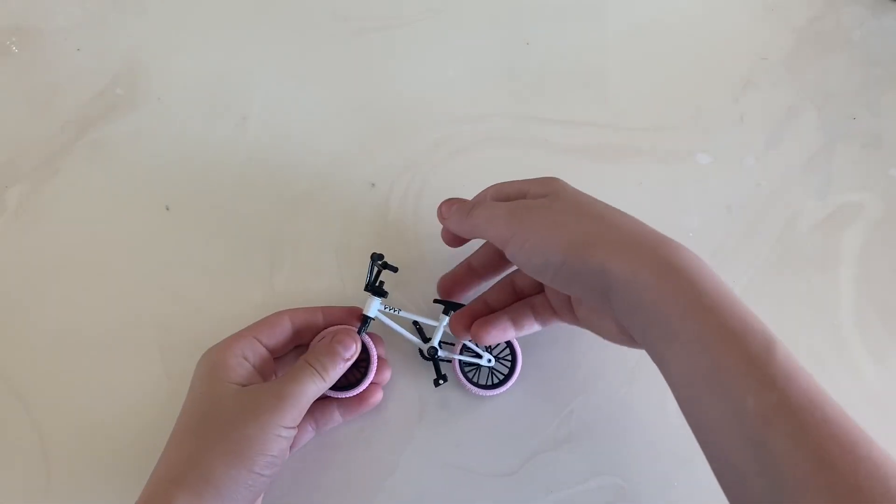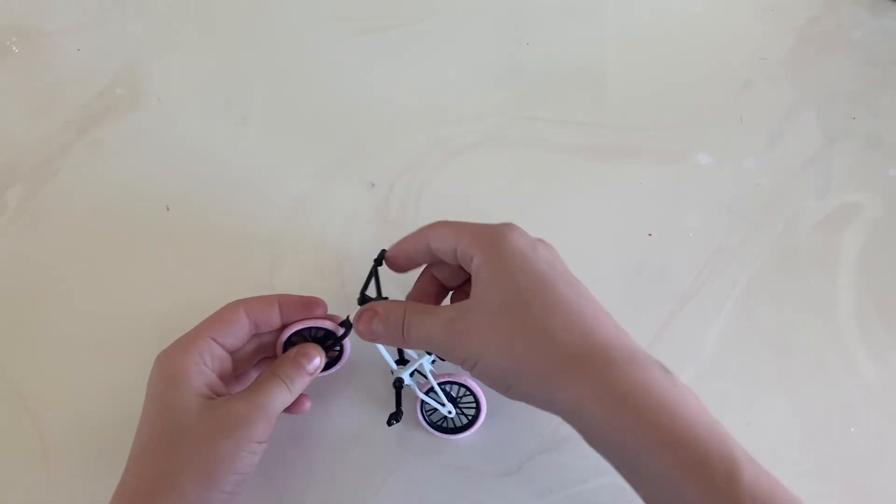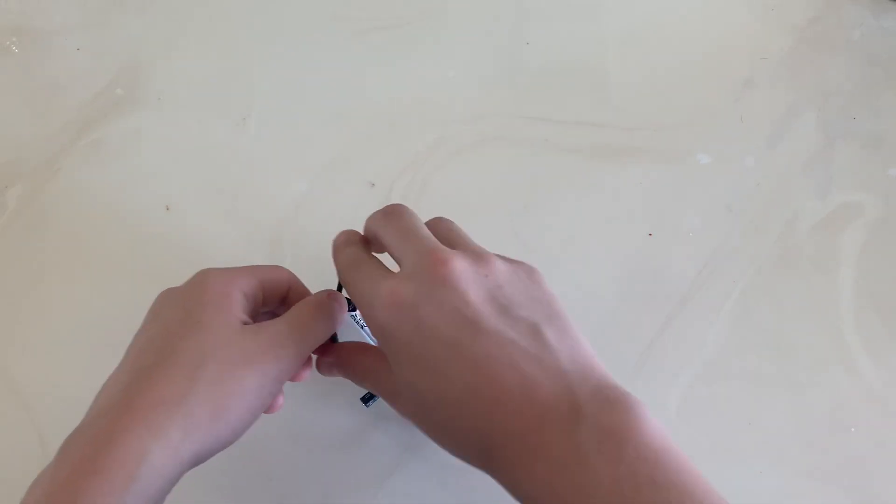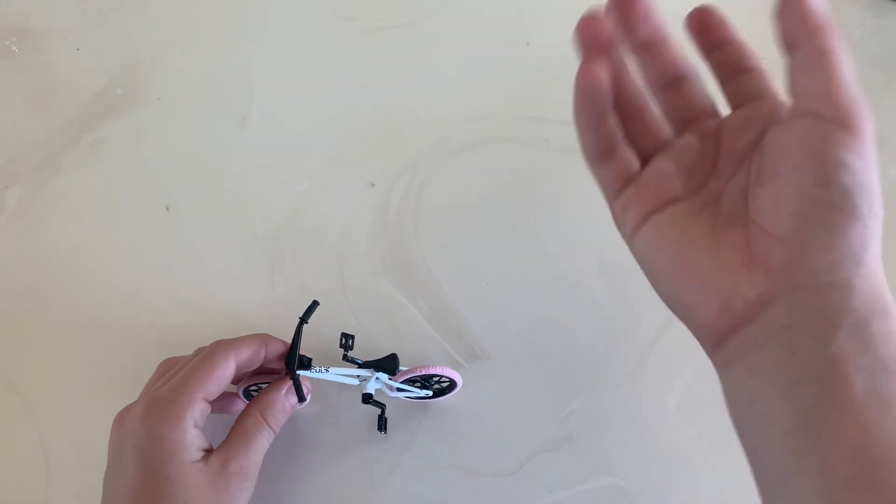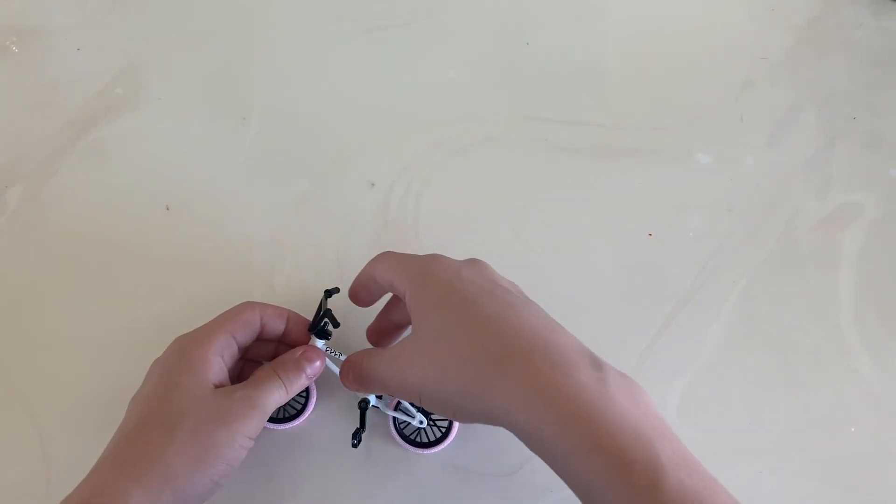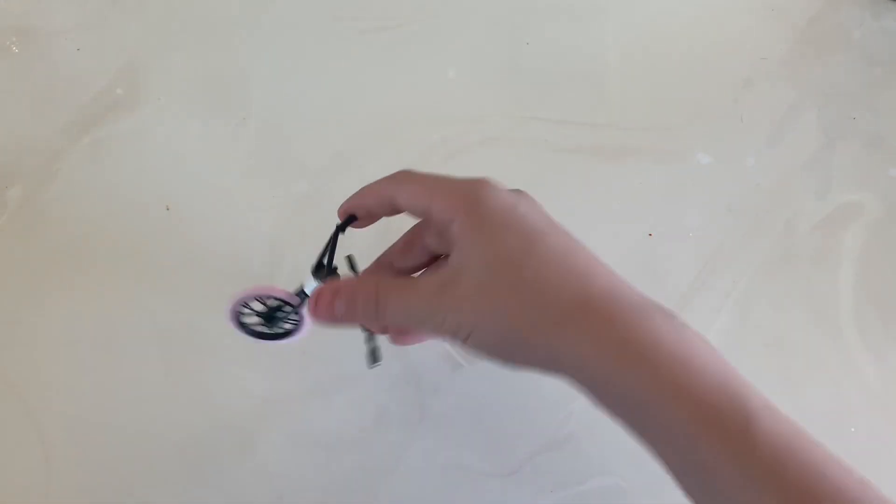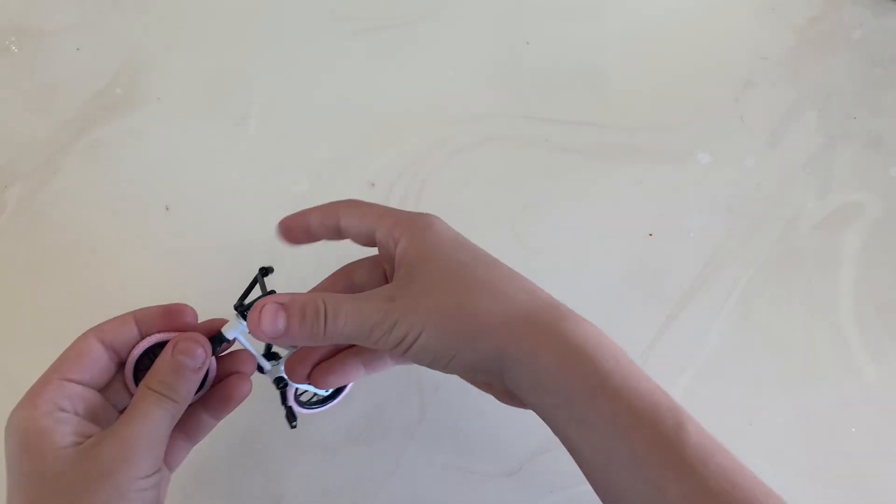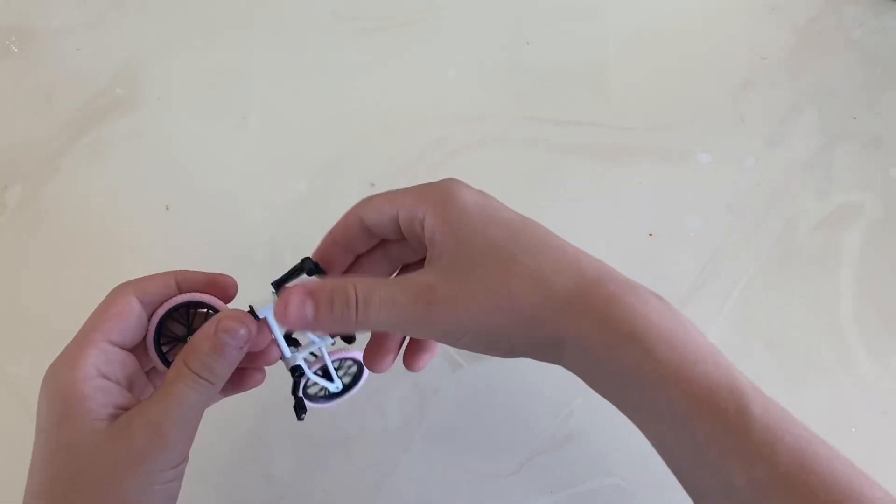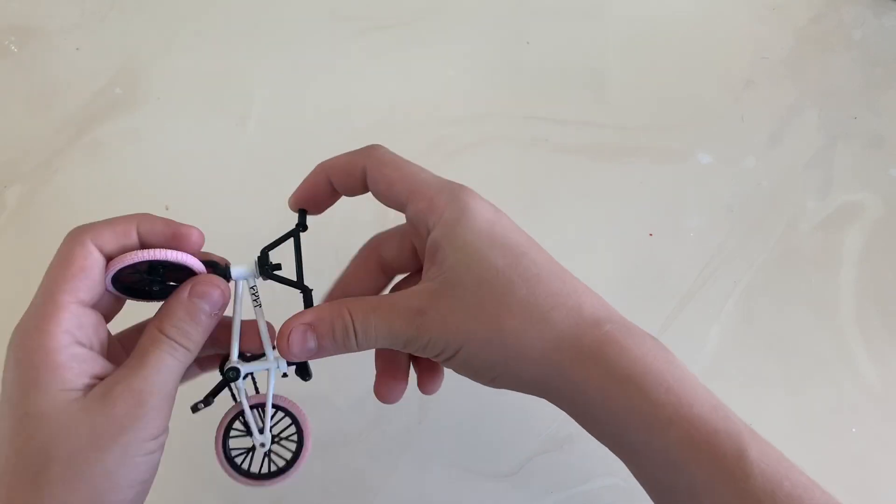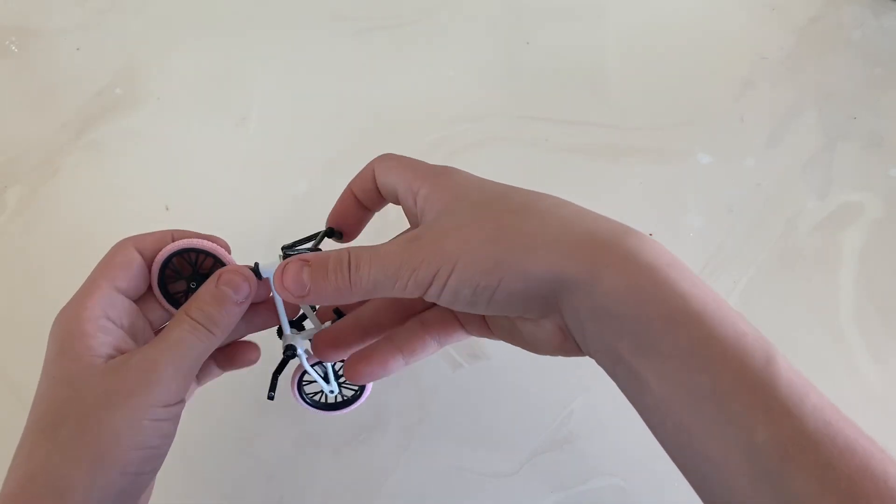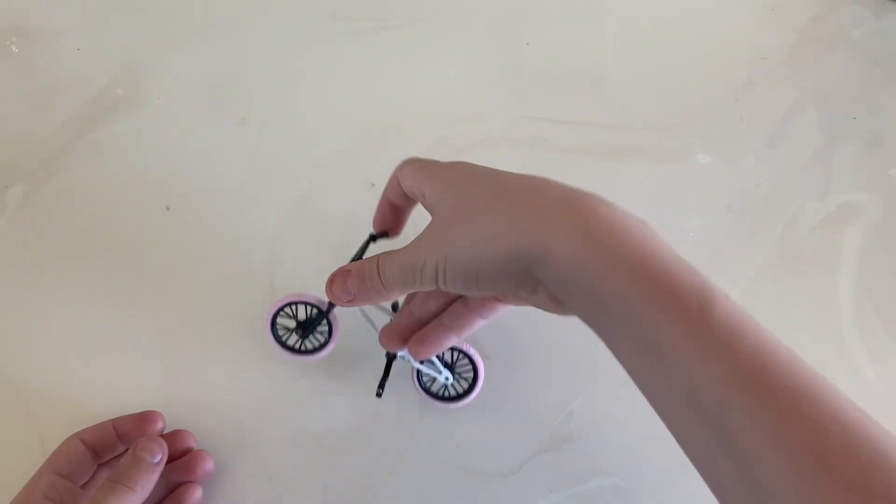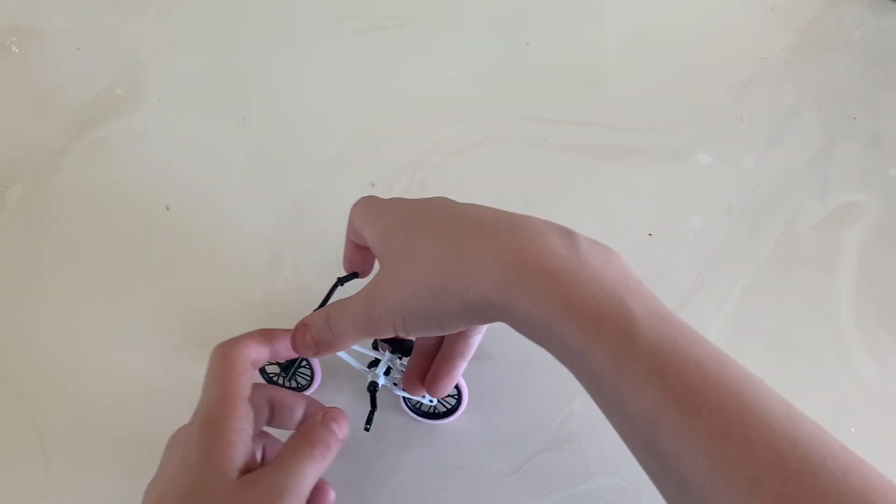So today I'm going to be showing you what these things are and what you can do with them and what's wrong with them. First thing is, how do you hold it? Like, do you hold it like this? Do you hold it like this? Do you hold the pedals? I don't really know, so I just looked it up and turns out you're supposed to hold it like this, with your thumb, your index finger on the front on the handlebars, and your middle finger and your ring finger right here, right where the seat part would be.